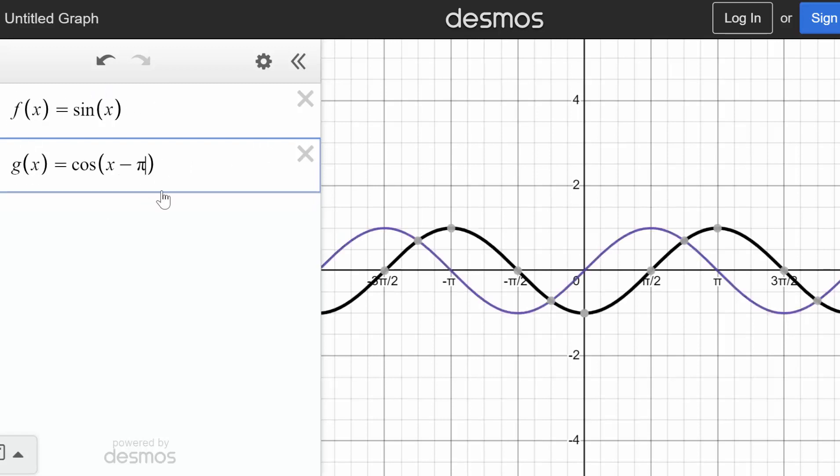And likewise, we could do the same thing for the sine of x. If we add pi over 2 to this, it will shift it so that it becomes the cosine function.